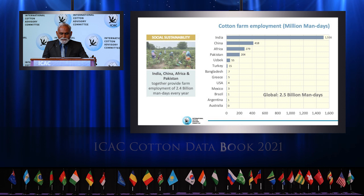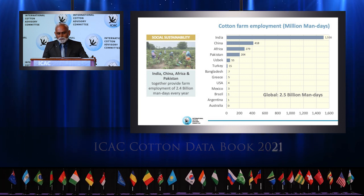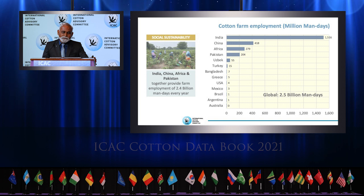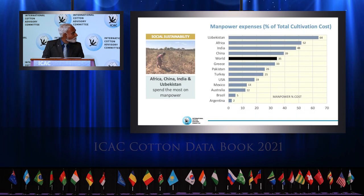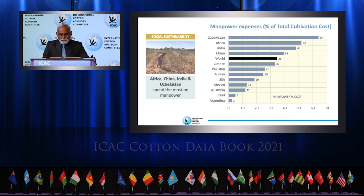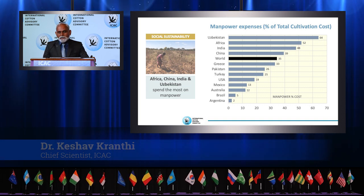India, China, Africa, and Pakistan also provide farm employment of 2.4 billion man-days every year. Thus, cotton farming not only means livelihood, but also enormous employment generation for millions of persons across the world. Countries in Asia and Africa spend a major share of their cost of cultivation on labor deployment, which adds greatly to rural livelihood.